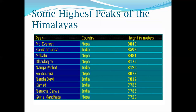Looking at the highest peaks of the Himalayas, Mount Everest located in Nepal has a height of 8,848 meters, whereas Kanchenjunga located in India has a height of 8,598 meters. These are the highest peaks of the Himalayas found in India and Nepal.